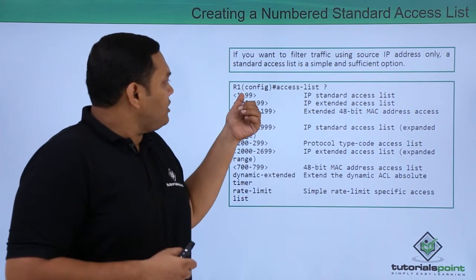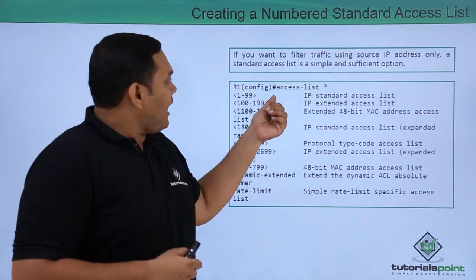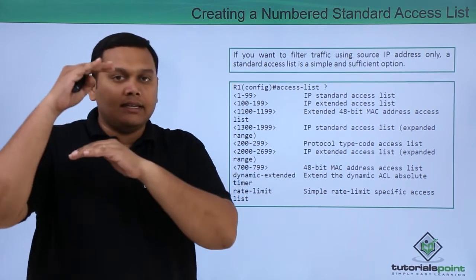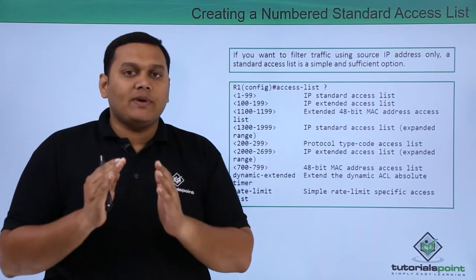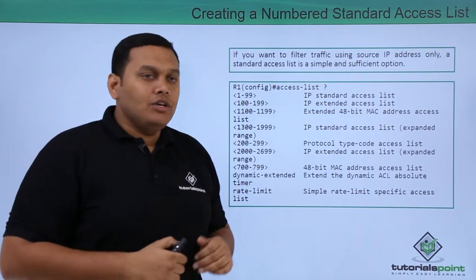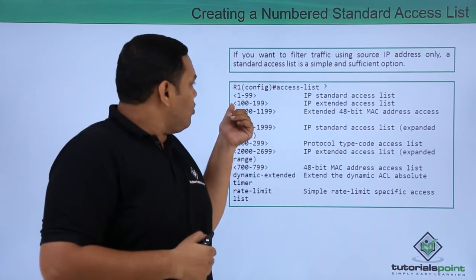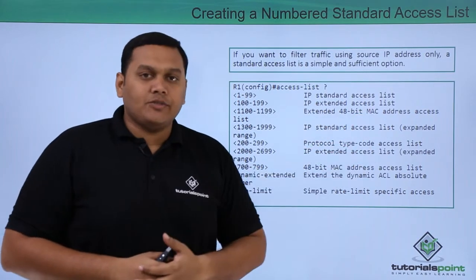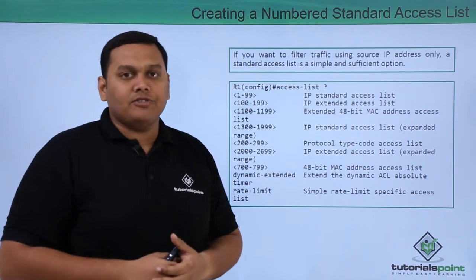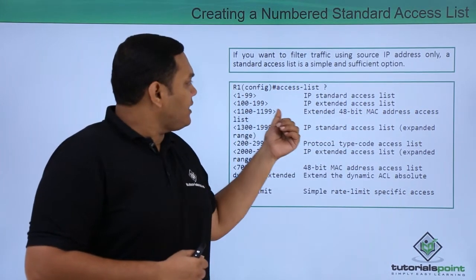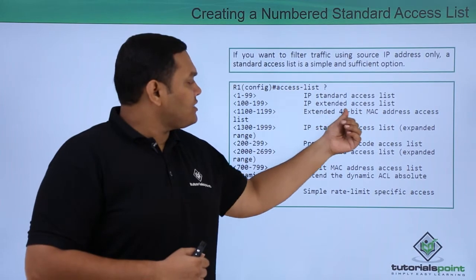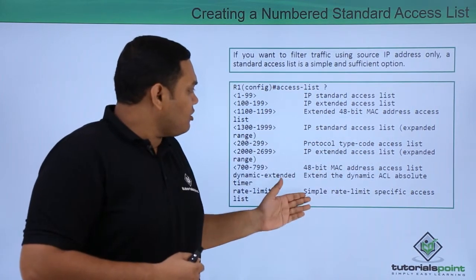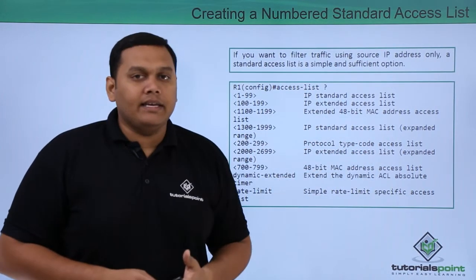In configuration mode, 'access-list ?' will give you the number range as well as the access lists available. Here, 1 to 99 is IP standard access list, as discussed in previous videos, and 100 to 199 is IP extended access list, and so on. The full list of details is available here.